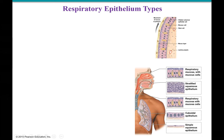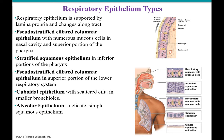In your throat you can see pseudo-stratified epithelium. Deeper in, we see cuboidal epithelium. And when we go into the alveoli where gas exchange happens, it is simple squamous epithelium. We see different types of cells lining the respiratory tract in order to filter and clean the air.